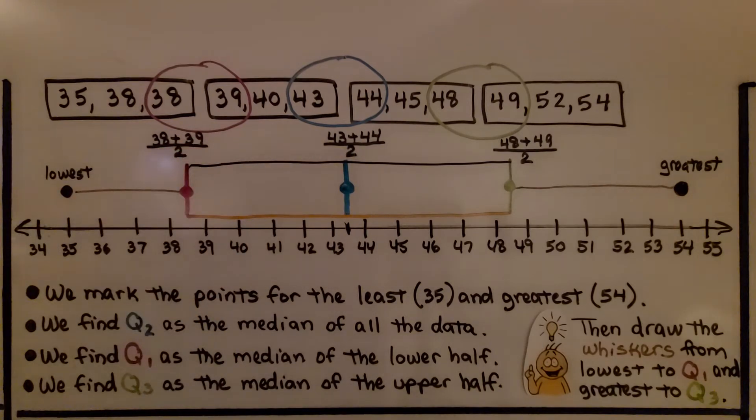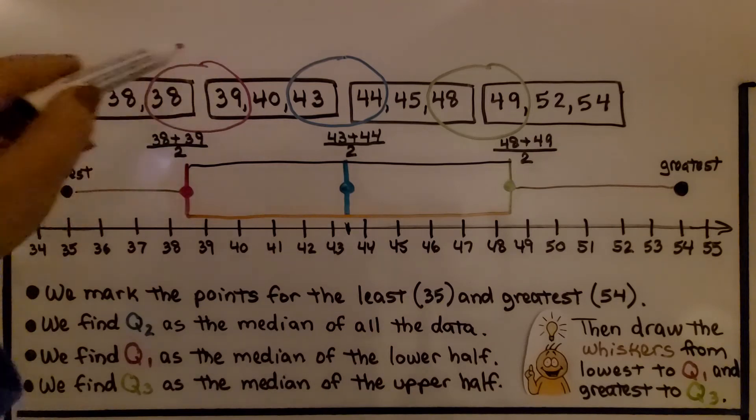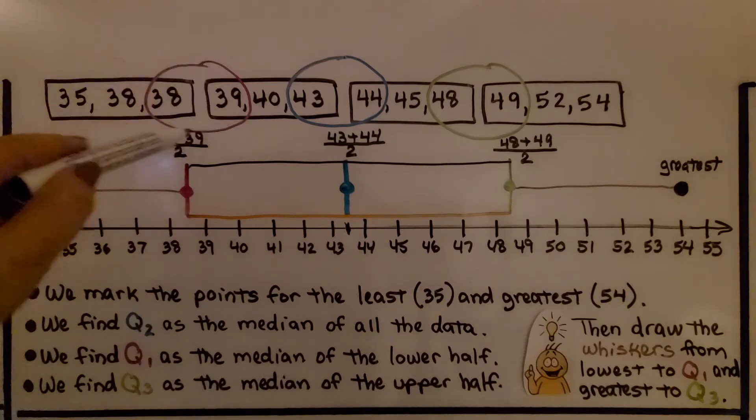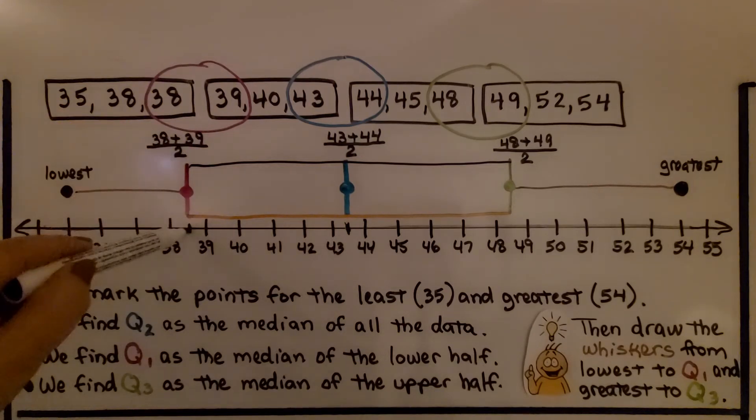Now we find Q1 as the median of the lower half. And the median, the middle numbers, would be 38 and 39. So we find the average, the mean for that. And we get 38 and a half, about right here.